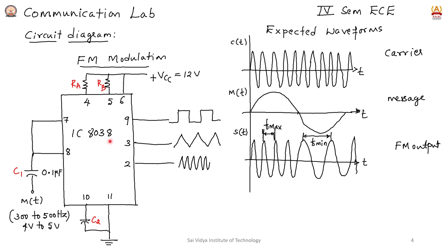As mentioned earlier, RA, RB, and the capacitor determine the carrier frequency of 10 kilohertz. In the absence of a message signal, this IC generates square wave, triangular wave, and sine wave. The IC operates at 12 volts DC supply.